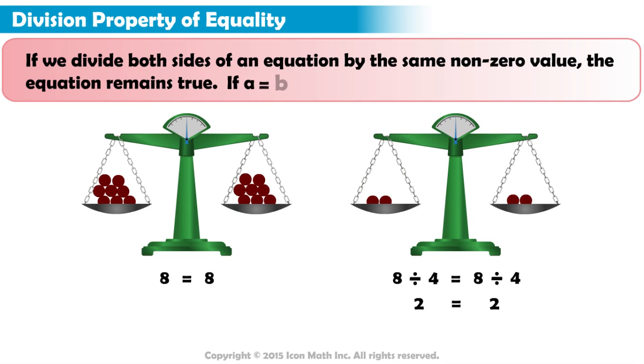If a equals b, then a divided by c equals b divided by c.